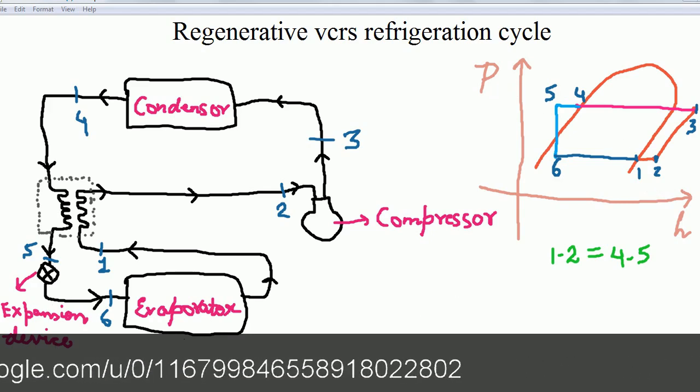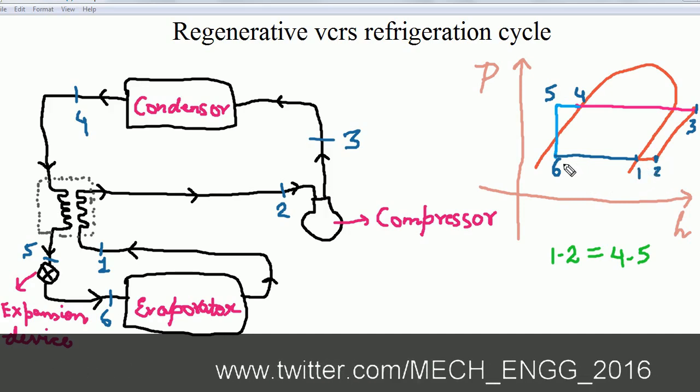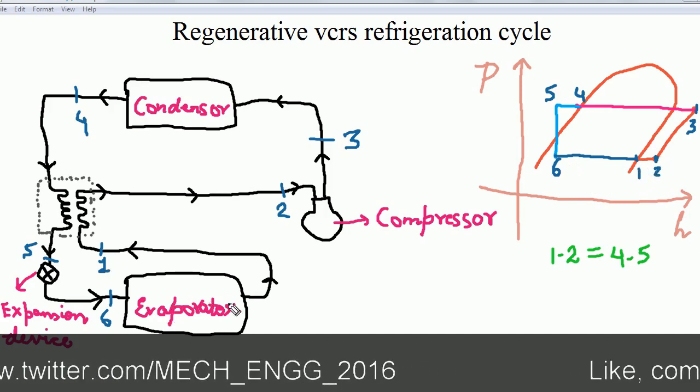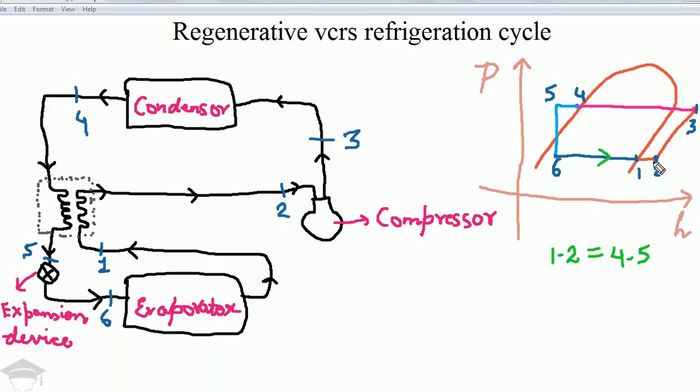Similarly, on the P-h chart, the cycle looks like this. From 6 to 1, it is taken in the evaporator. From 1 to 2, the heat is taken in.